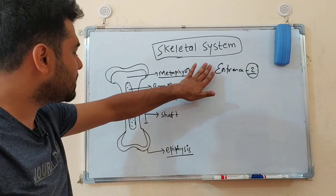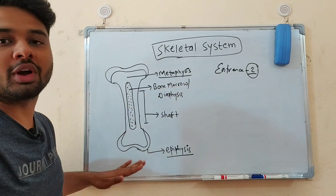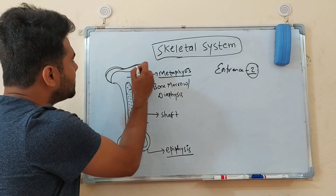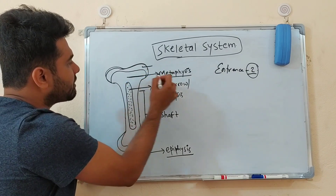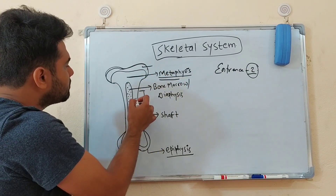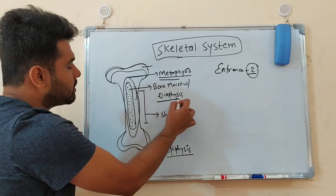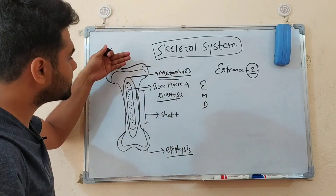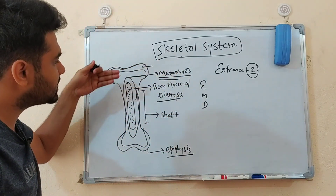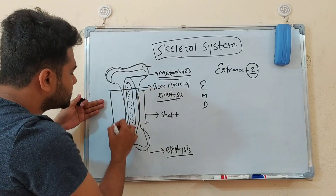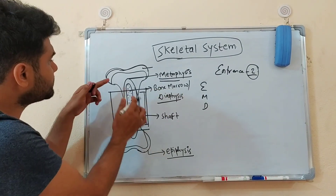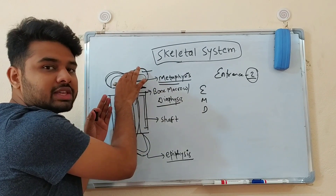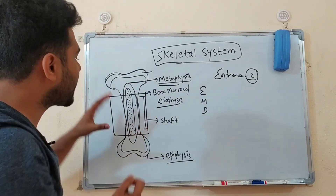In the Skeletal System, we will look at the parts of a bone. The bone parts are: the outer surface is Epiphysis, then Metaphysis where bone marrow is present, and Diaphysis. The mnemonic for this is EMD — Epiphysis, Metaphysis, and Diaphysis. The Diaphysis is the long part, the soft part. The Metaphysis is called the growth region, and then the Epiphysis is present. This is the basic sketch.